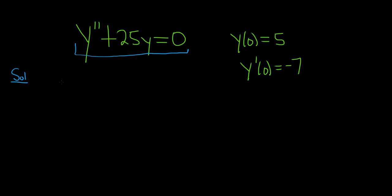Because it's the second derivative, we'll write down m squared, just matching it with the derivative. Then 25y becomes 25, and this equals 0.